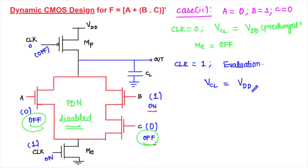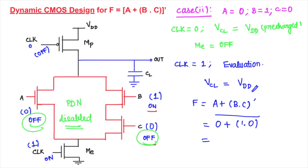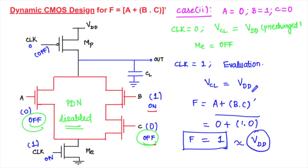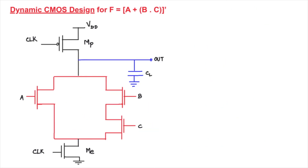Substituting the values into the logic expression: (0 + 1·0)̄ = (0 + 0)̄ = (0)̄ = 1, which is equivalent to VDD. The implementation is correct for this case.